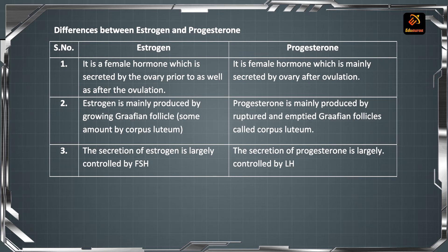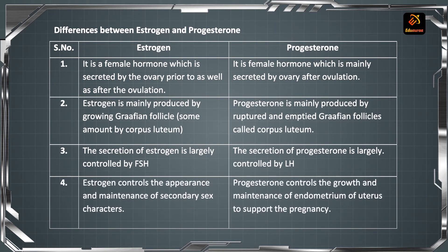The secretion of progesterone is largely controlled by LH — Luteinizing Hormone. Estrogen controls the appearance and maintenance of secondary sexual characters. Progesterone controls the growth and maintenance of the endometrium of the uterus to support pregnancy.